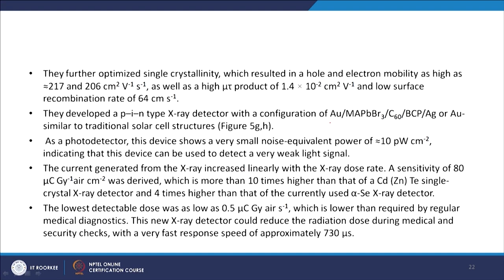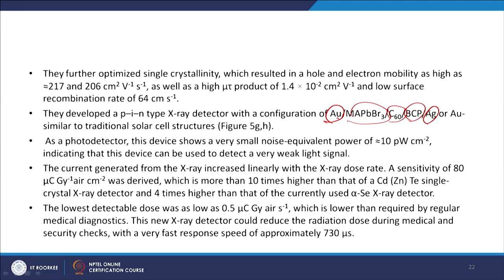In a solar cell structure, gold and silver create asymmetry between two metal electrodes — working in photovoltaic mode means working in an asymmetric device. In photoconductive mode, we work in a symmetrical device pattern. The current generated from the X-ray increases linearly with the X-ray dose rate. A sensitivity of 8×10⁴ μC Gy⁻¹cm⁻² was derived, which is more than 10 times higher than that of a cadmium zinc chloride single crystal X-ray detector, and 4 times higher than that of a currently used alpha-selenium X-ray detector.